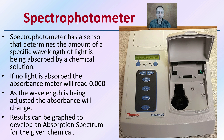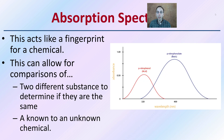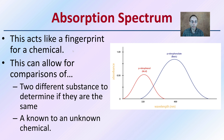Results can be graphed to develop an absorption spectrum for a given chemical. This simply acts as a fingerprint for a chemical. It also allows for comparisons between two different substances to determine if they are the same substance, and supports known-to-unknown chemical comparisons.